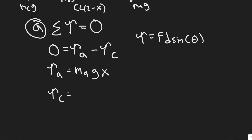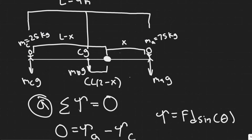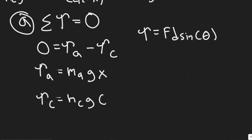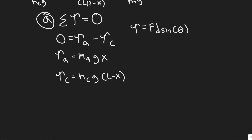For the child, the force is M_C times G, the distance is L minus X, and theta is again 90 degrees so sine cancels. This gives a torque of M_C times G times (L minus X). Our full equation is: zero equals M_A times G times X minus M_C times G times (L minus X).